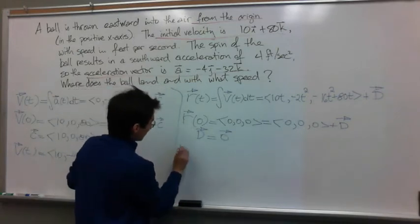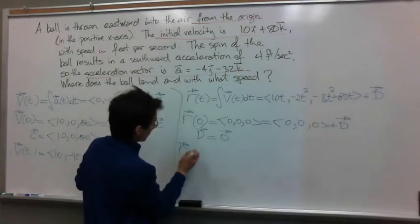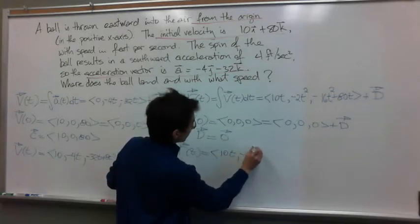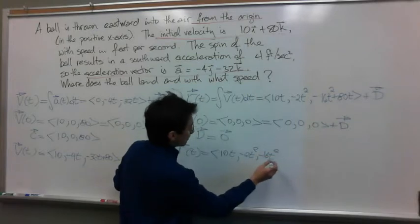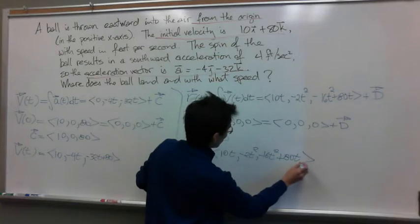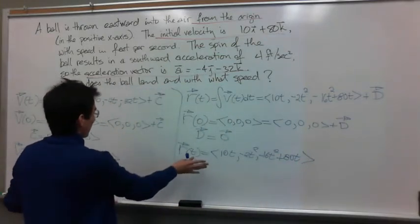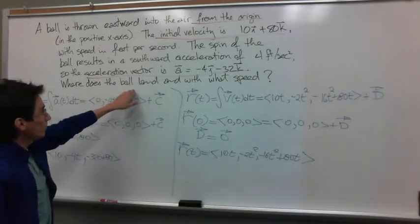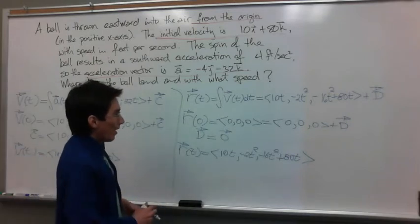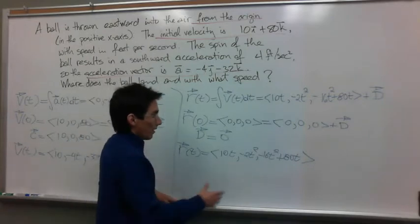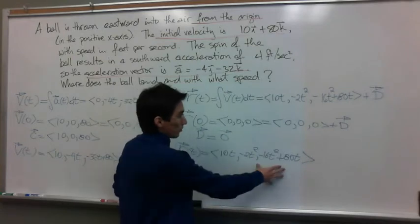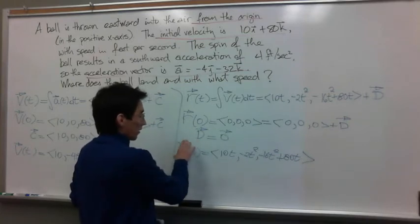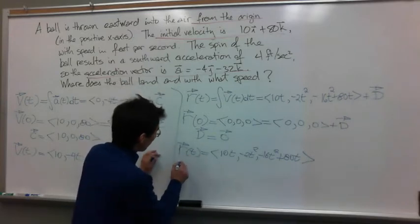Now I can have a complete position vector function. After getting my position vector function and my velocity vector function, I can answer the question. They are asking us to find the final position of the ball — that means when it lands. I can do so by making the z-component of my position vector function equal to 0, so that I can find t, and then use that value of t to evaluate the position vector and get the final position of the ball.